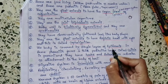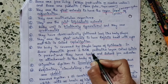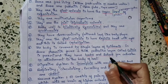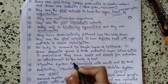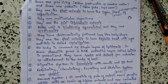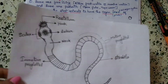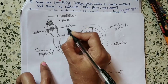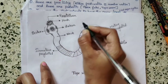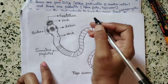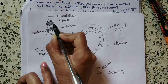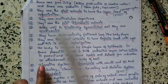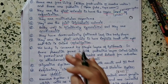The body is covered by a single layer of epidermis. In some parasitic forms, a thick protective layer called the cuticle is present. They also have hooks and suckers for adhesion or attachment to the body of the host. For example, in tapeworm you can see the hooks and suckers, which help in attachment of the body to the host.